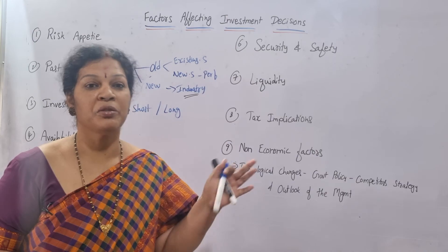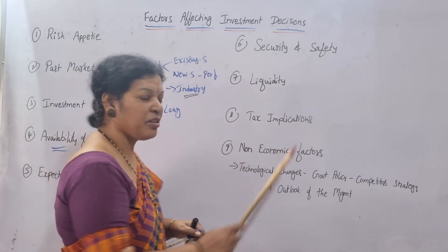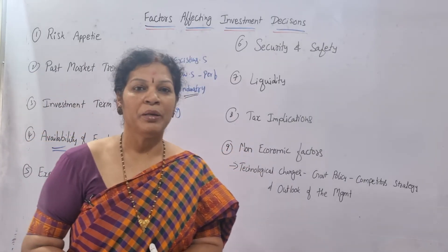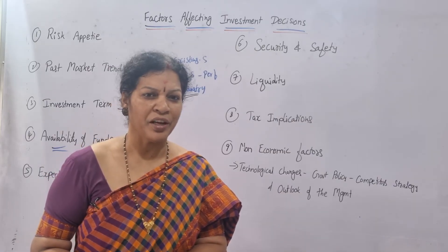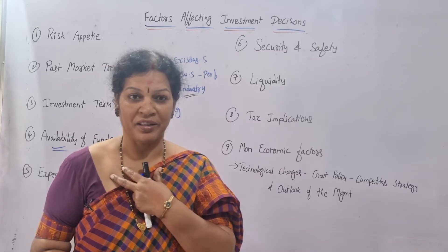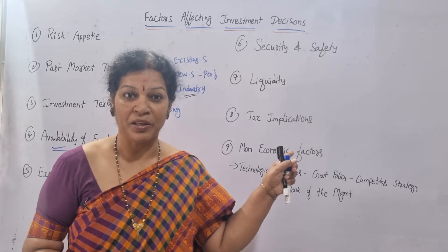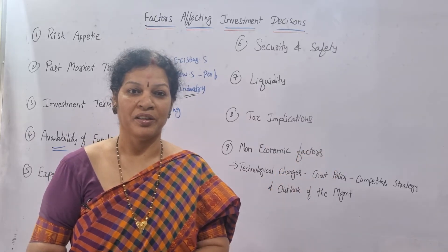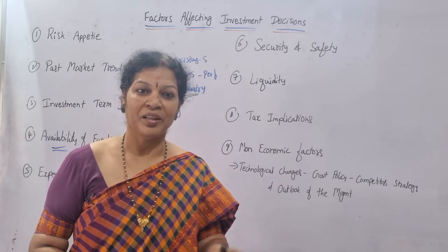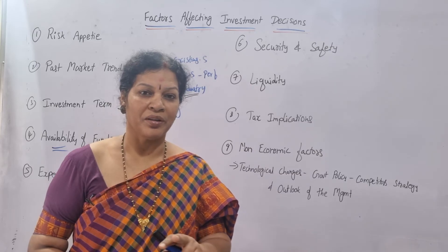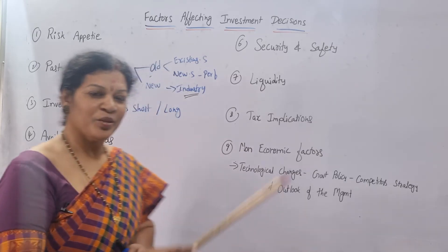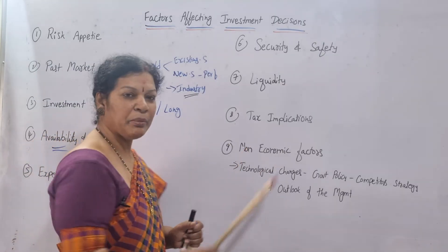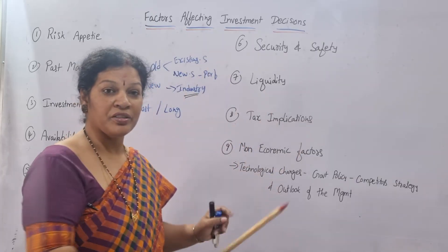Next, tax implications also make a difference. You have to consider whether your investment is giving any kind of tax benefits. If you are under the tax bracket, you must consider tax implications — is there a tax deduction or not? If there is, then go for that kind of investment. If not, you must decide whether to go ahead or not, which creates a dilemma. This is also going to make a difference in investing your money. And also non-economic factors make a difference.